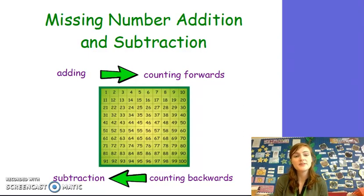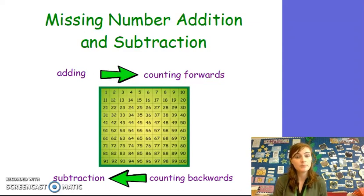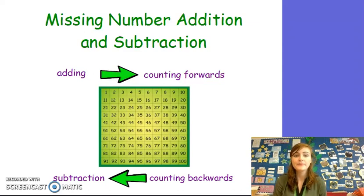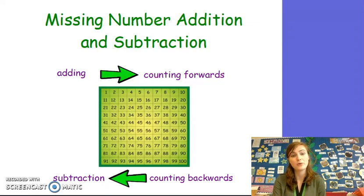Hi boys and girls and welcome to this week's Flip Learning for Maths. This week we're going to be looking at how to solve missing number addition and subtraction sentences. Before you start this video you're going to need a number line, hundred square, a pen and some paper. It would also be a great idea to watch our previous videos on simple addition and subtraction and how to use a number line and hundred square to count forwards and backwards. Let's get started.